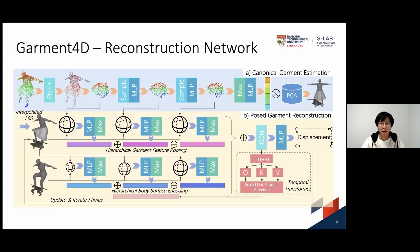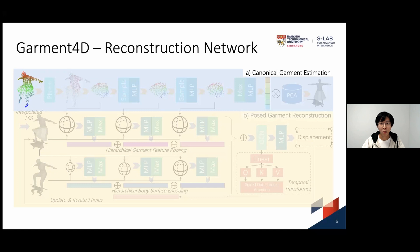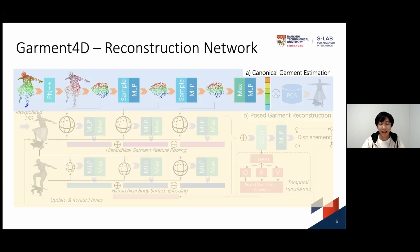Now let's look into the details of the reconstruction network. For the canonical garment estimation, we first use PointNet to parse the points of the garment of interest, which is the skirt here. Then the skirt points are processed by multiple downsampling and MLP layers to predict the PCA coefficients, which will give us the canonical skirt reconstruction. Next, we need to further reconstruct posed skirts using the canonical skirt.